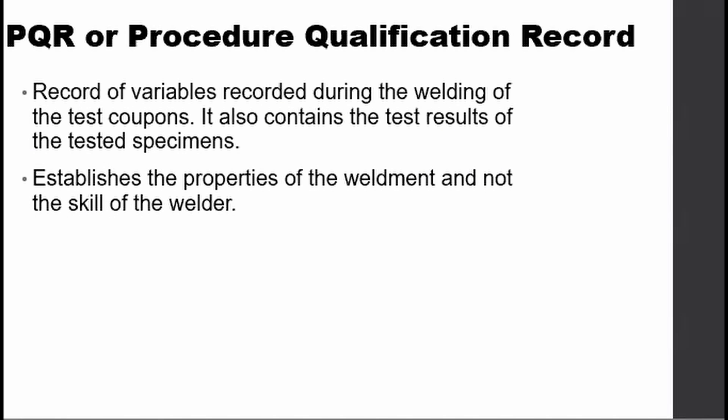PQR, or Procedure Qualification Record, is the record of variables during the welding of the test coupons. It also contains the test results of the tested specimen.